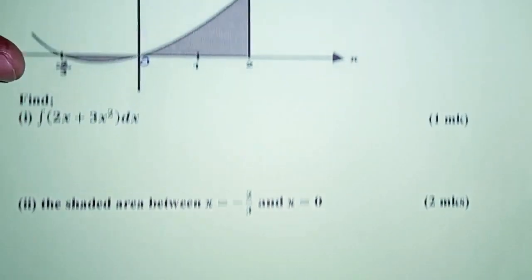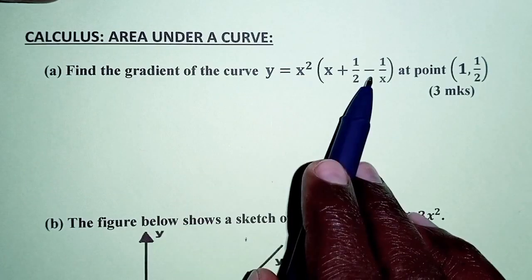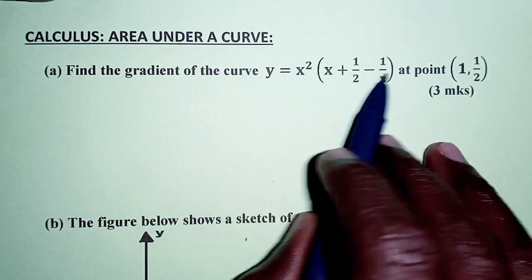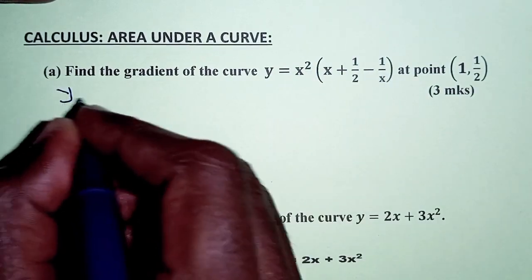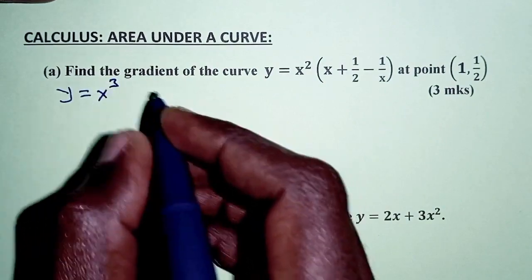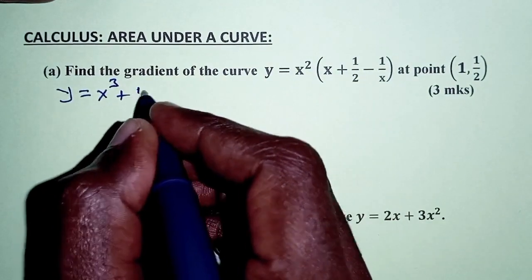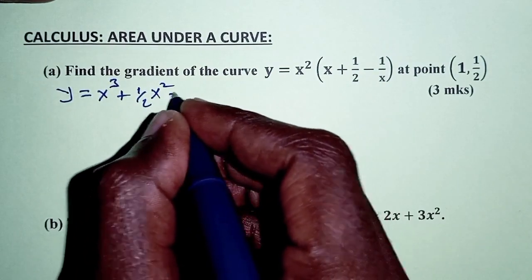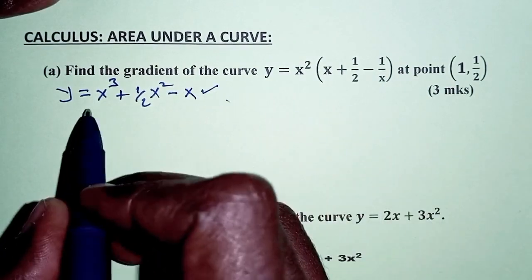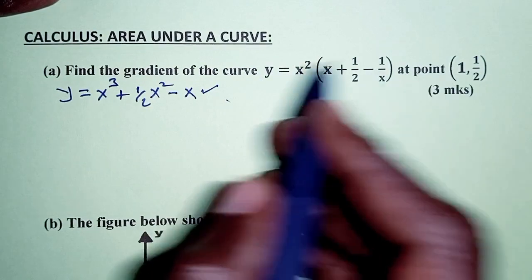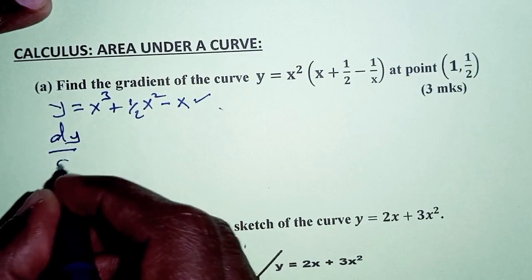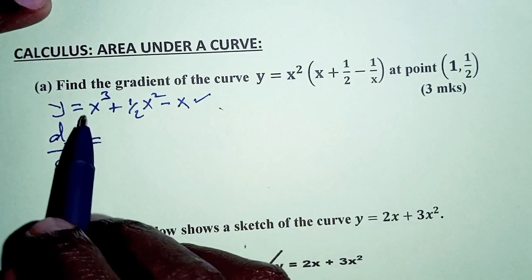Let's begin with part A. We have to find the gradient of the curve at the point (1, 1/2). Before finding the gradient, we expand the right-hand side: y equals x squared times x, giving x cubed, plus x squared times a half, giving (1/2)x squared, minus x squared times 1 over x, giving x.